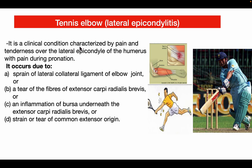Tennis elbow, also known as lateral epicondylitis, is a clinical condition characterized by pain and tenderness over the lateral epicondyle of the humerus, with pain during pronation. It occurs due to sprain of the lateral collateral ligament, a tear of the fibers of extensor carpi radialis brevis, inflammation of the bursa deep to extensor carpi radialis brevis, or a tear of the common extensor origin.